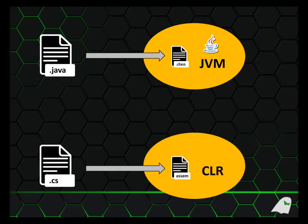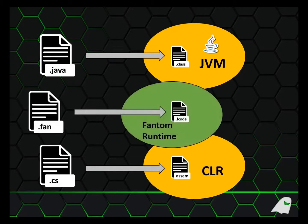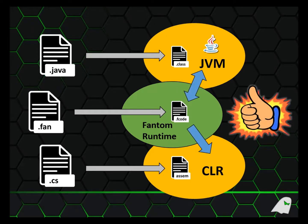And then there are .NET languages like C-sharp. They have CS files that get compiled into assemblies, which then get run on the Common Language Runtime. In a similar vein, there's Phantom, which has fan files that get compiled into F-code files, which are run on the Phantom runtime. But that Phantom runtime itself then runs on both the Java Virtual Machine and the CLR.